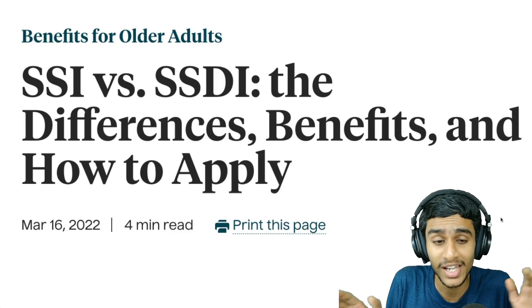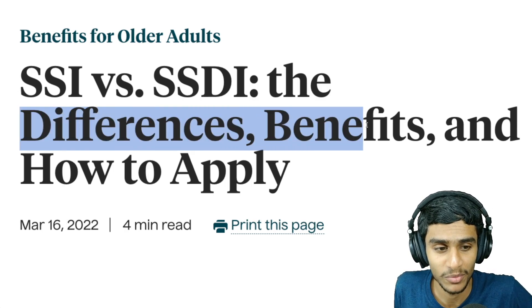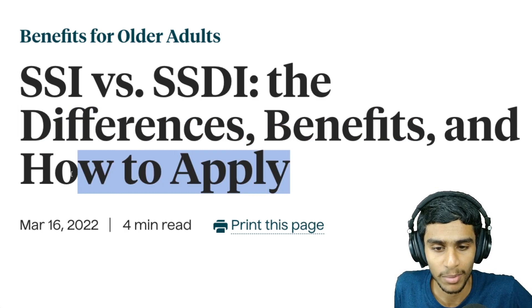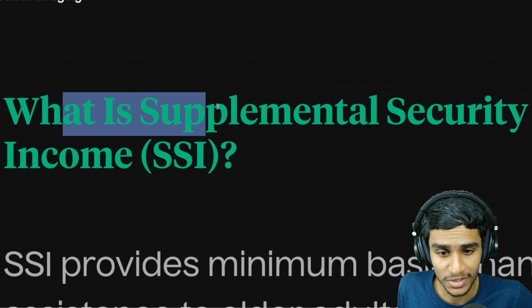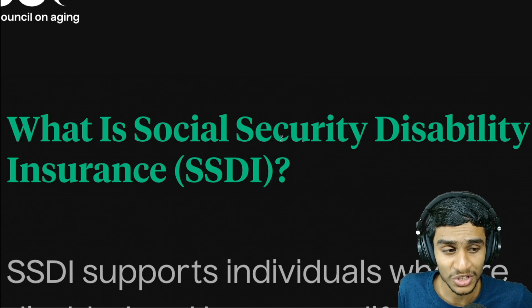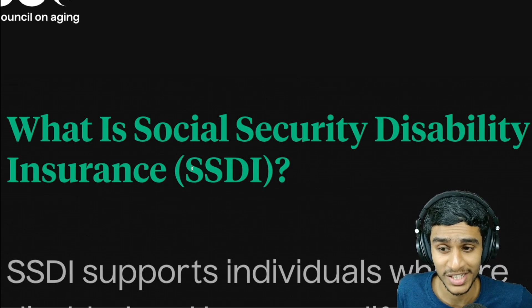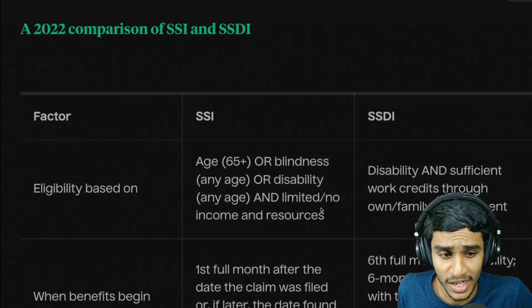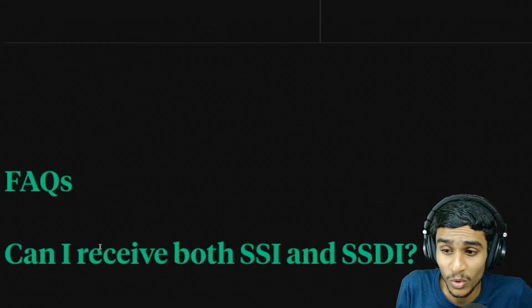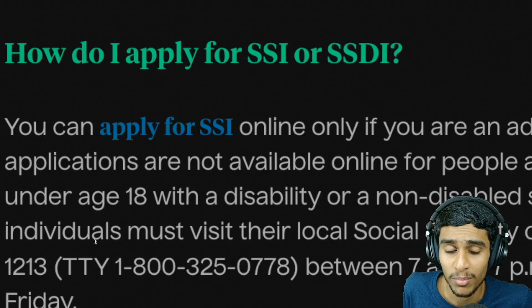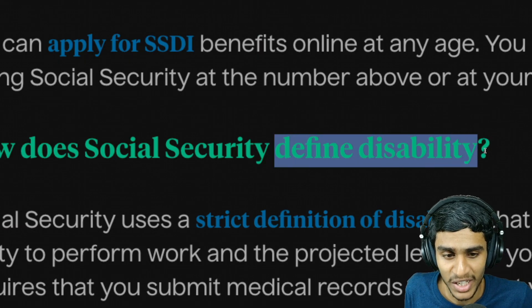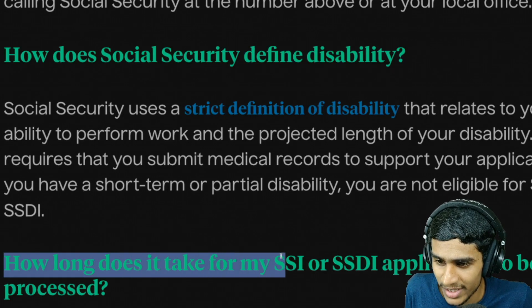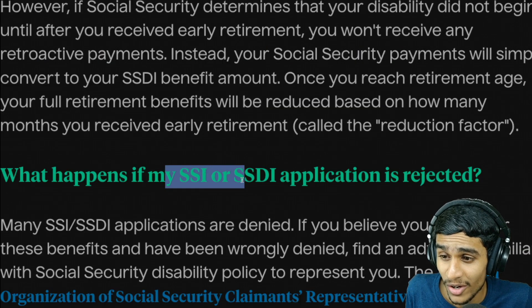Hey, what's going on guys, this is Kedar here. Today in this video we are going to compare SSI versus SSDI: what are the differences between SSI and SSDI benefits, how you can apply for both of them, what is Supplemental Security Income (SSI), what is Social Security Disability Insurance (SSDI), the clear difference and comparison between SSI and SSDI, all the parameters, can you receive both at the same time, how to apply, what disability means according to Social Security, how long applications take, and what happens if your application is rejected.